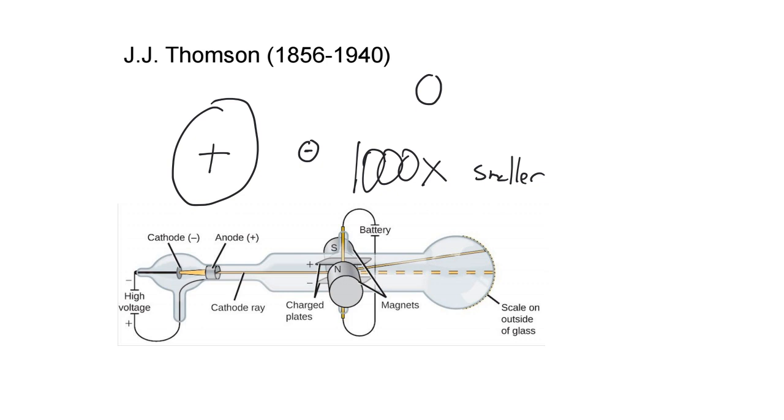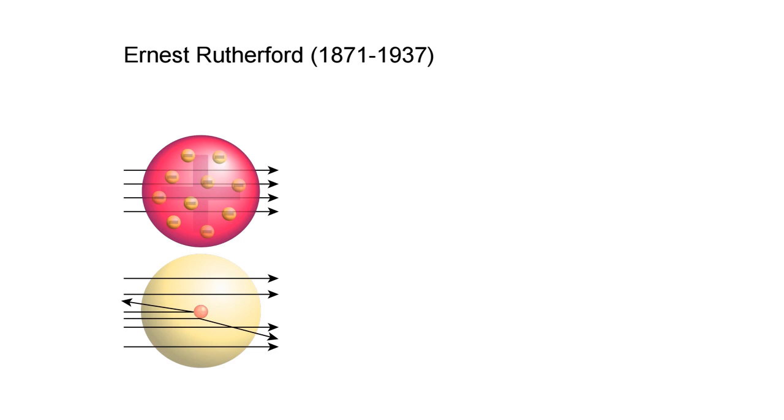Then this positively charged particle we know is the proton. So important to know about Thompson is he discovered the electron using a cathode ray. Yeah, definitely write down that this is a cathode ray. And a really important part of it is that it has a magnet. Maybe you can draw a very similar diagram to this in your notes.